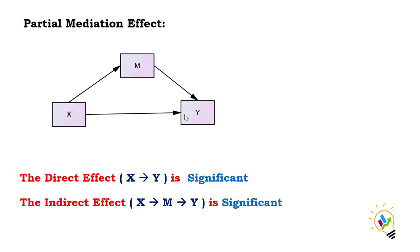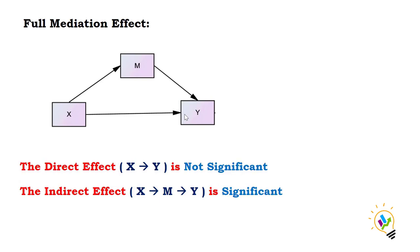Now, what is full mediation effect? In full mediation effect, the direct effect is insignificant — that is, X impacting Y directly is not significant — but the indirect effect is significant, meaning the impact of X on Y through M is significant. This is called full mediation.